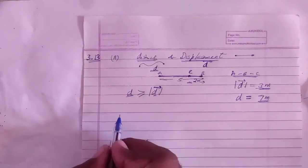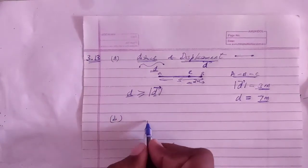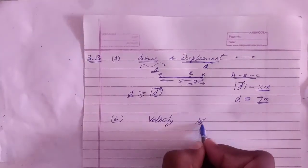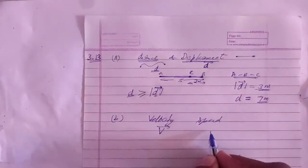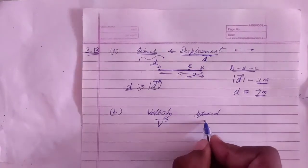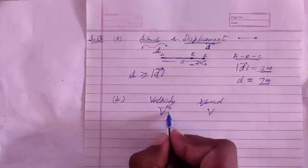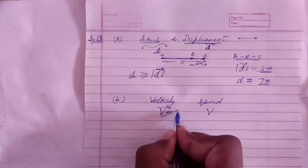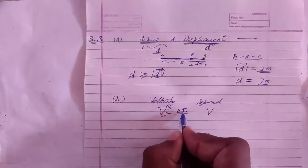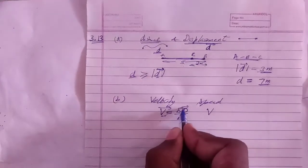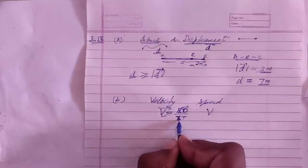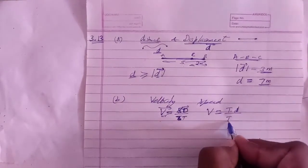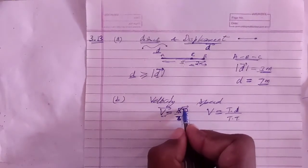Now for Part B, let us talk about velocity and speed. We represent average velocity with a vector arrow (v-bar) and average speed simply as v_s. Average velocity equals total displacement divided by total time. Average speed equals total distance divided by total time.